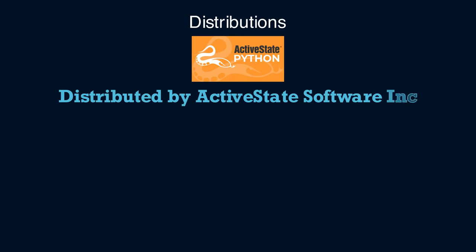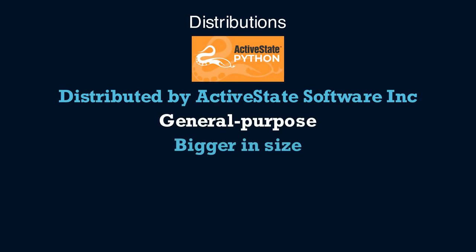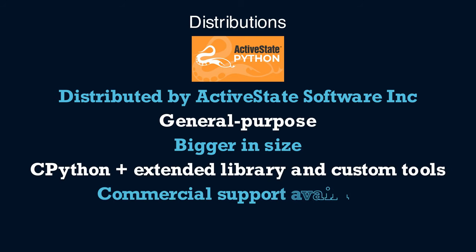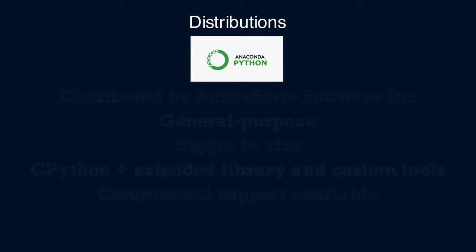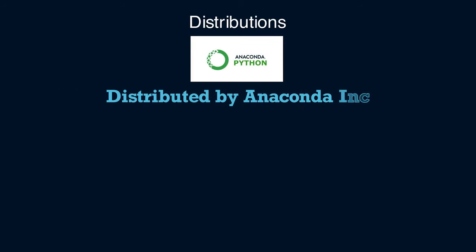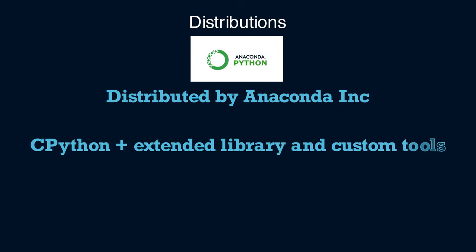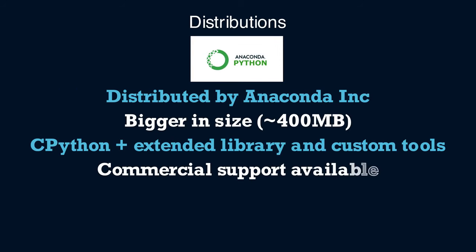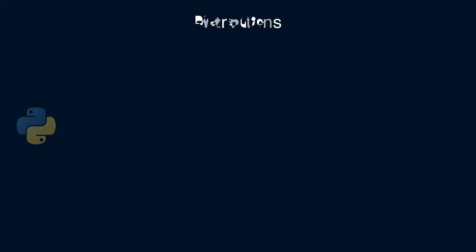ActivePython, distributed by ActiveState, comes with CPython and a bigger library and additional tools, with commercial support provided for enterprises. Anaconda is another major CPython distribution with commercial support, focused on data science purposes.